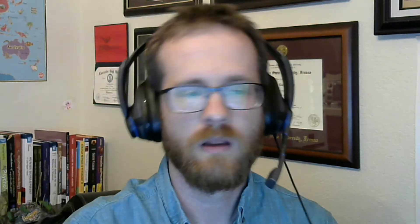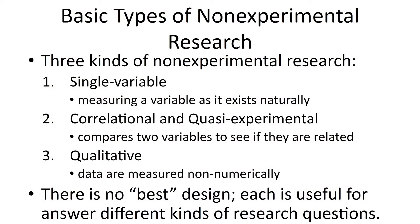There are a lot of different kinds of non-experimental studies, but they basically come in three types. The first is single variable research, where you're just measuring a variable as it exists naturally. The second is correlational or quasi-experimental research, where you're comparing two variables to see if they're related. The third is qualitative research, where data are measured in a non-numerical way. There's no such thing as the best design — you just need the most appropriate one for your question.